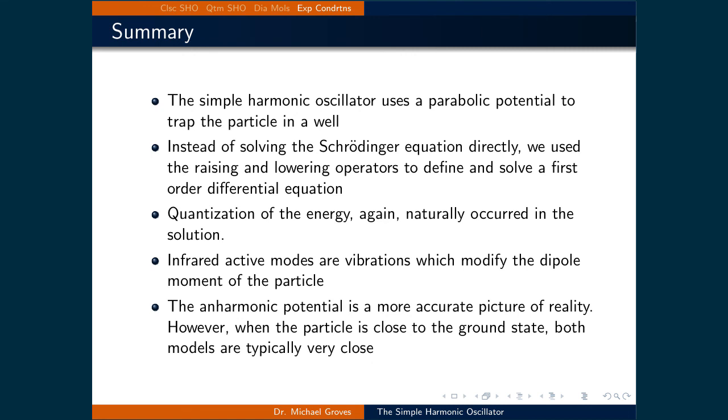To summarize this lecture: the simple harmonic oscillator uses a parabolic potential to trap the particle in a well. Instead of solving the Schrödinger equation directly, we used raising and lowering operators to define and solve a first order differential equation. Quantization of energy naturally occurred. Infrared active modes are vibrations which modify the dipole moment of the particle. Finally, the anharmonic potential is a more accurate picture of reality. However, when the particle is close to the ground state, both models are typically very close.